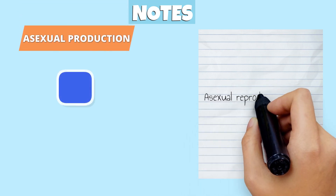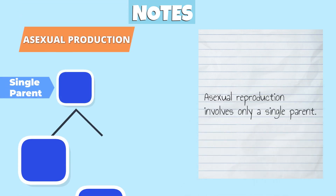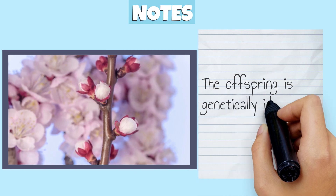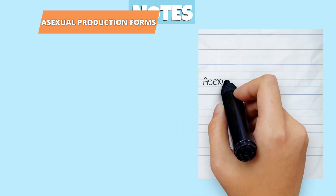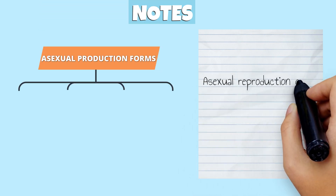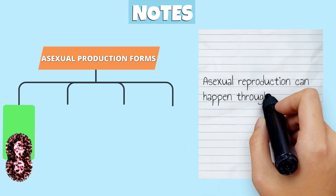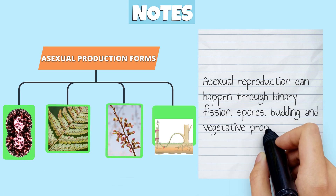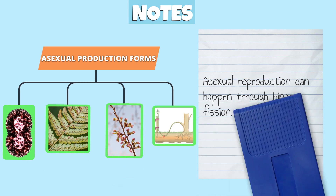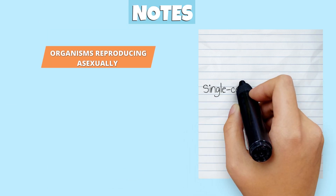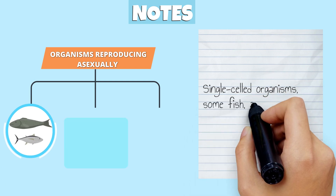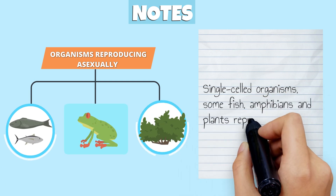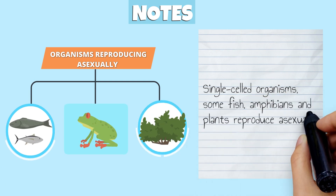Asexual reproduction involves only a single parent. The offspring is genetically identical to the parent. Asexual reproduction can happen through binary fission, spores, budding, and vegetative propagation. Single-celled organisms, some fish, amphibians, and plants reproduce asexually.